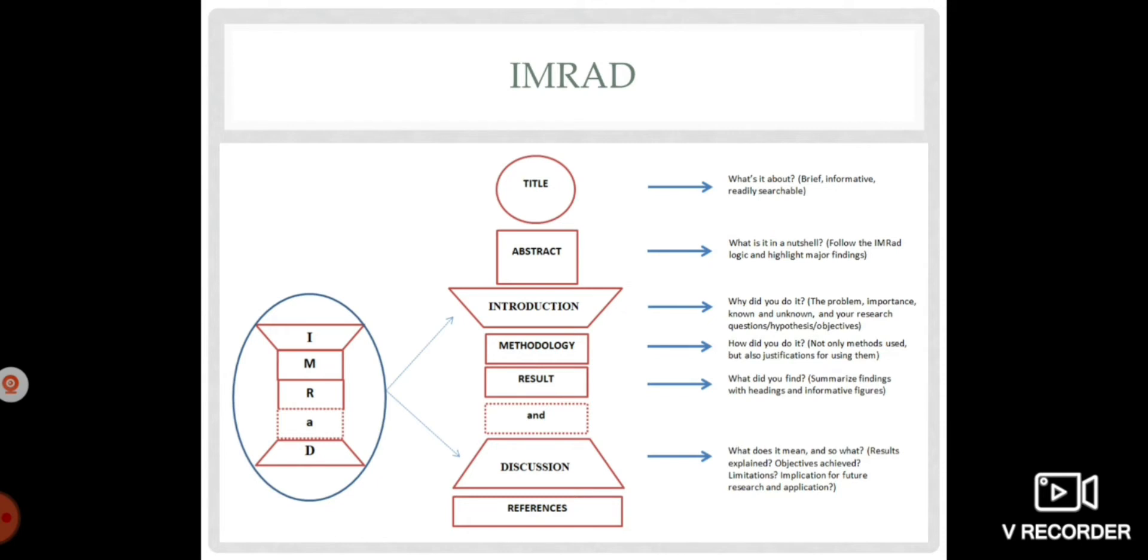As you can see, just like any other format, it starts with the title, then the abstract, then followed by the main body of your research paper. The main body consists of the introduction, methodology, result, and the discussion. Then, the last part of your research paper is for the references.